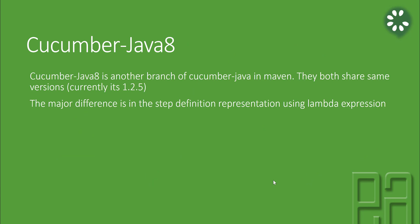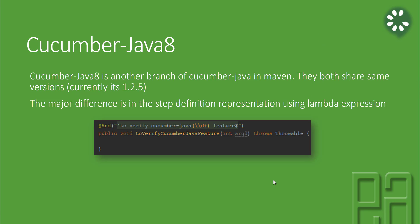Cucumber Java 8 is another branch of Cucumber Java in Maven, and they both share the same version, which is 1.2.5. They're pretty much exactly the same thing — the only major difference is in the step definition representation using lambda expressions. In the current version of our step definitions, you have an annotation, then the name of the particular step definition, and a method following it. But since we have anonymous methods in Java 8, the current implementation of Cucumber Java 8 works differently.